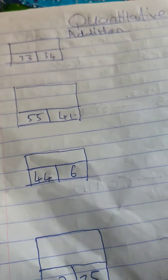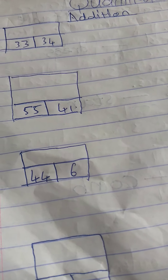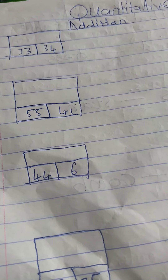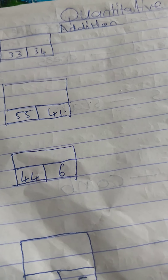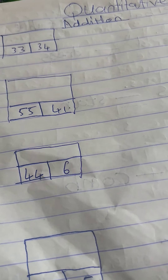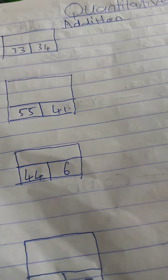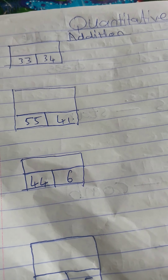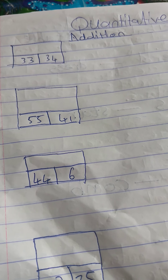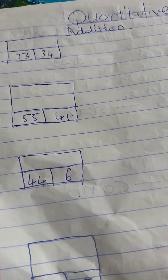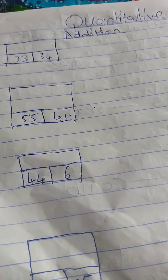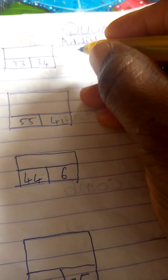Hello kids, welcome to today's class on quantitative. You can see the following numbers — we are going to be adding two-digit numbers. When you are given a two-digit number, the easiest way to get your answer is by arranging them under tens and units. When you arrange them under tens and units, you will easily get your answer.